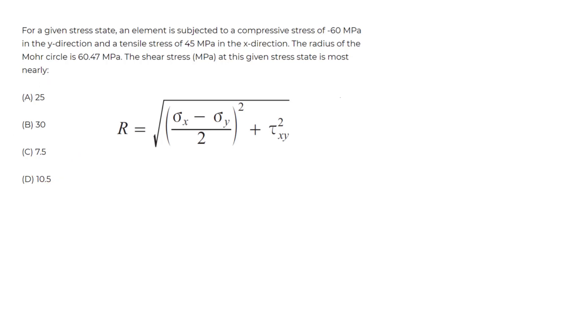So we know we're given sigma x, sigma y, and the radius of Mohr's circle. So let's write these. The radius is given to be 60.47 MPa. Sigma x is going to be the one in the x direction, so in the x direction it's 45, it's a tensile stress, so it's positive 45 MPa. Sigma y is going to be the negative 60 and it's a compressive, that's why it's negative. And it's in the y direction, so it's going to be negative 60 MPa.